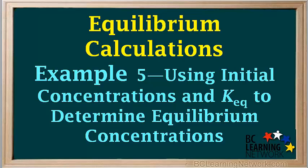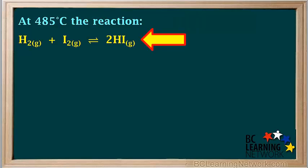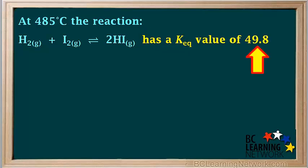In this example, we're given an equilibrium equation and only the initial concentrations and the value of KEQ, and we're asked to calculate the concentrations of the reactants and products at equilibrium. At 485 degrees Celsius, the reaction H2 gas plus I2 gas gives 2HI gas has a KEQ value of 49.8.